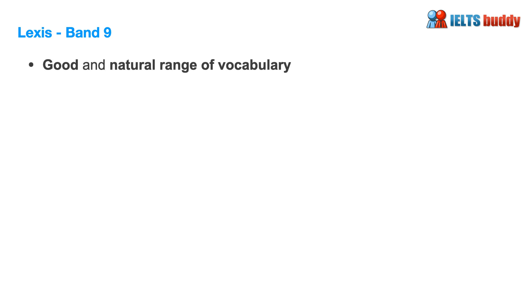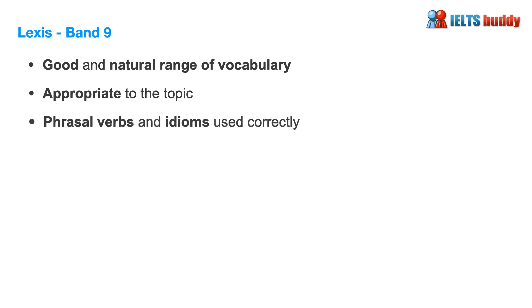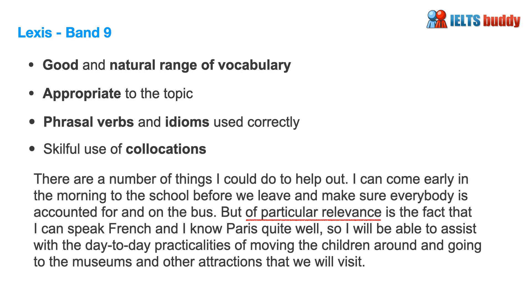Looking at lexis — why it's a band 9 for vocabulary — there's a good natural range of vocabulary appropriate to the topic. Phrasal verbs and idioms are used correctly, and there's skillful use of collocations. Some good vocabulary of particular relevance includes 'day-to-day practicalities' and 'attractions'. An example of a phrasal verb correctly used is 'to help out'. An example of a collocation is 'accounted for' — 'accounted' collocates with 'for' — which is an example of correct collocation use.